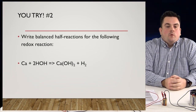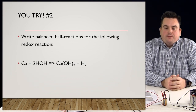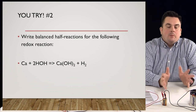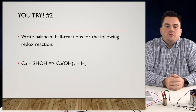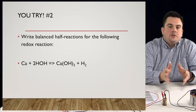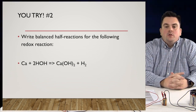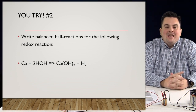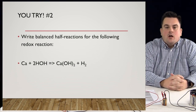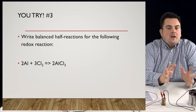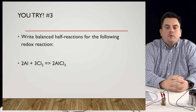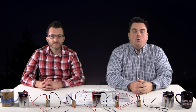You try number two: write balanced half-reactions for the following redox reaction. Remember to assign oxidation states, figure out what's being oxidized and reduced, and then write your half-reactions ensuring the total number of electrons gained equals the total number of electrons lost. You try number three: write balanced half-reactions for the following redox reaction. And that's going to do it for today's episode on half-reactions. It's been emotional.